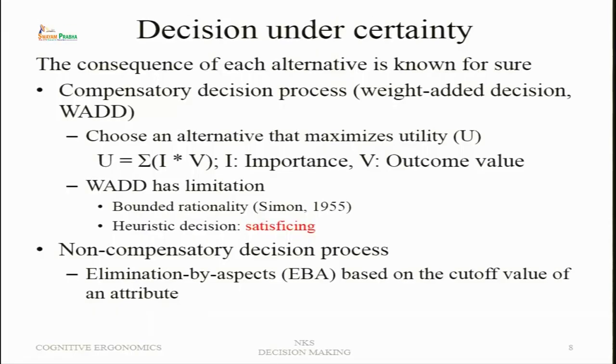The simplest situation is decision under certainty — when we are certain about consequences and outcomes, probabilities are not involved, and we know exactly what will happen. For example, farmers certain about whether it will be a rainy season can decide which crop will be useful. When the consequences of each alternative are known for sure, a compensatory decision process called the weighted additive decision (VAD) can be used.